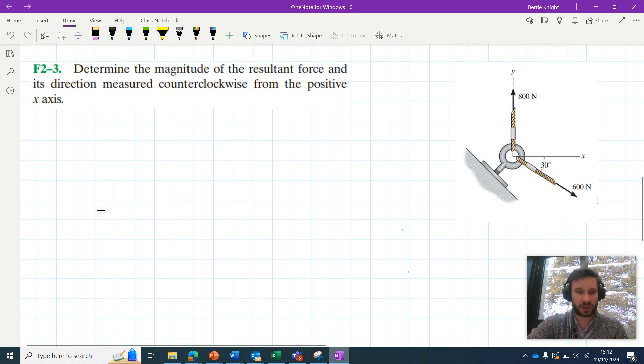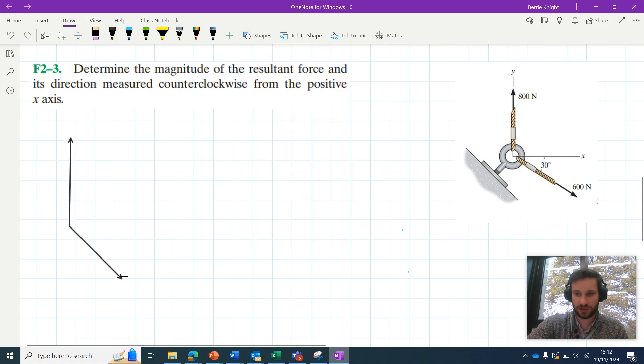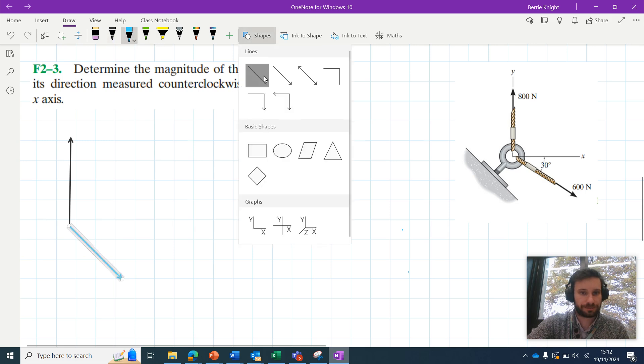off with this problem as we might routinely at this point, which is drawing a free body diagram. So you've got this 800N force acting up, and you've got this 600N force acting diagonally to the bottom right.